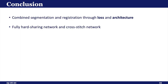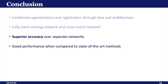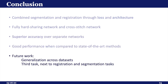In conclusion, we have combined segmentation and registration through the loss in a registration network, and through architecture in the fully hard-sharing network and the cross-stitch network. The joint networks have superior accuracy over the single-task networks and compare favorably to state-of-the-art methods on the validation set. Accuracy on the test set could be improved by training the networks on that data or using transfer learning. Further investigations could go towards the addition of a third task, such as the generation of the radiotherapy treatment plan. Thank you for watching.